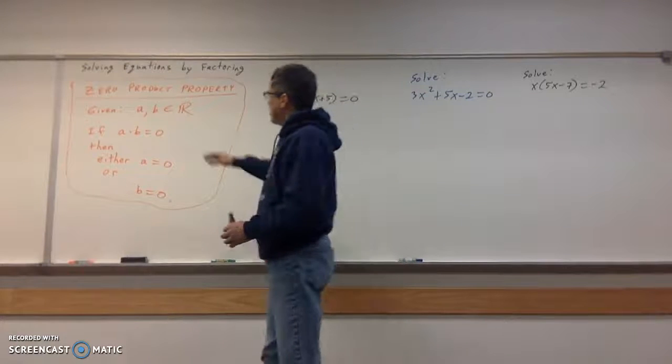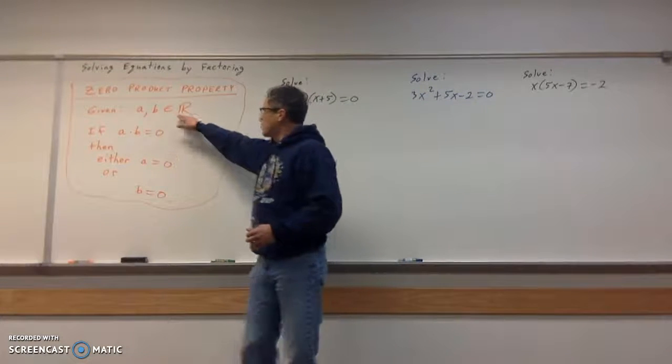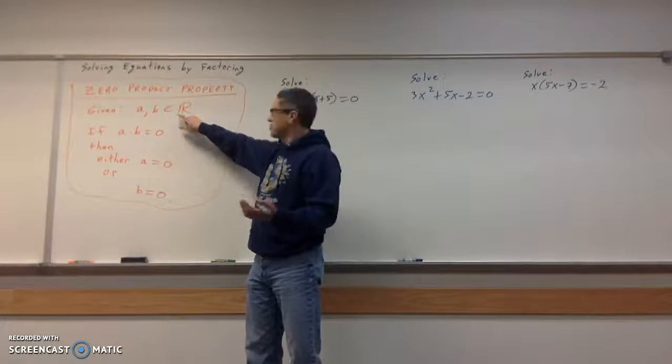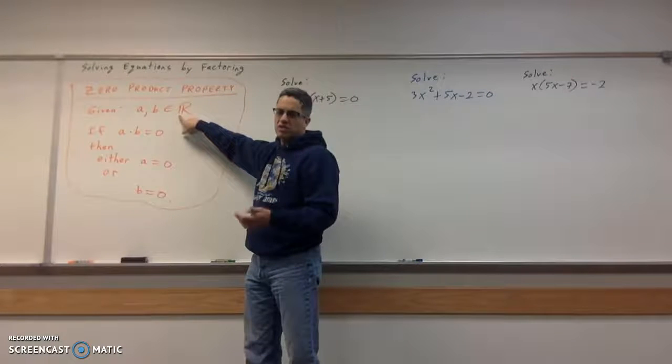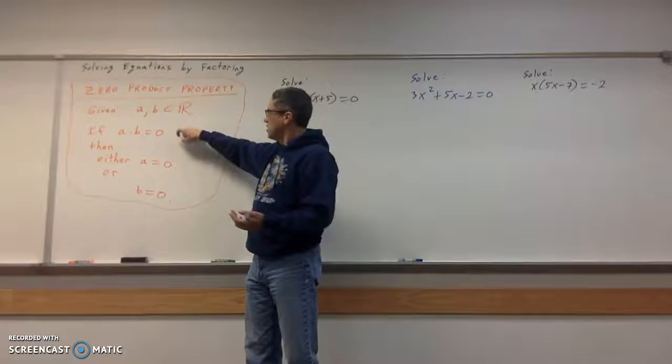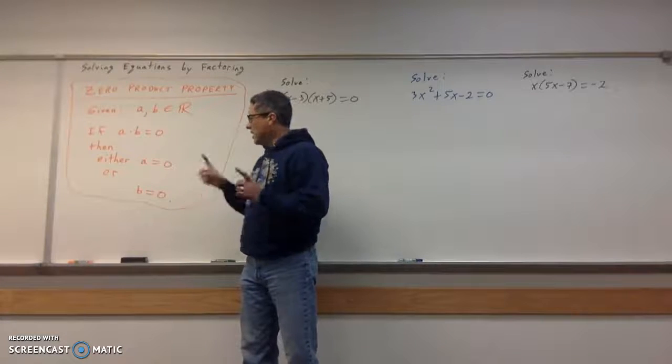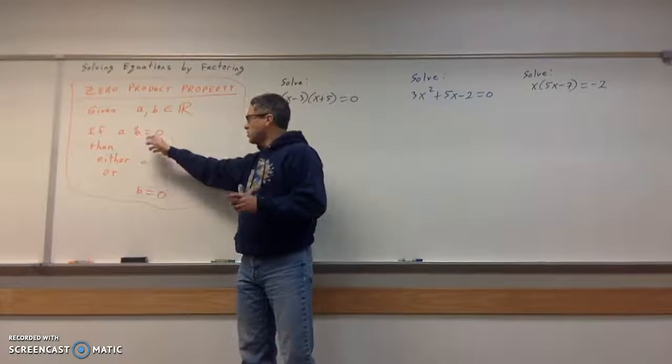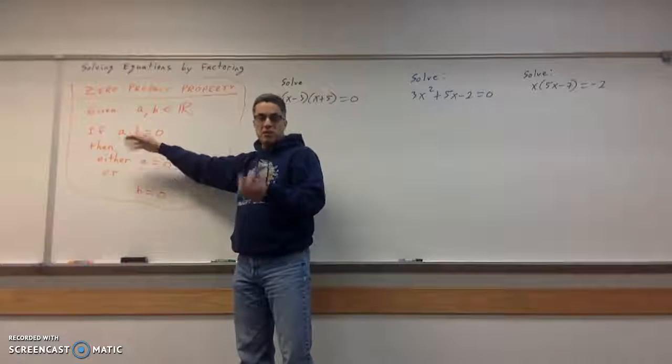It's called a zero product property. Given a and b belong to real numbers - so don't worry about the fancy word here, I'm just too lazy to write real numbers. If a times b equals zero, then either a is equal to zero (who cares what b is, right? Zero times b would be zero), or b equals zero (who cares what a is).